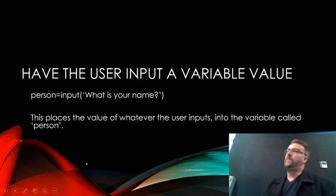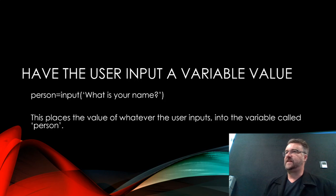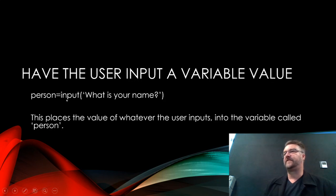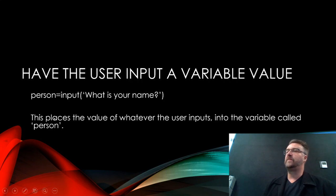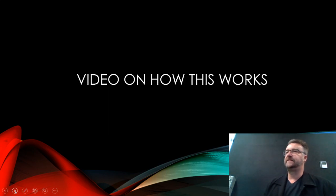Now, sometimes we want the user to input a variable value. For example, they might put in their name, their age, et cetera. The way we do that is we write person equals - so that's the variable name, person - person equals input, what is your name, and notice the inverted commas there. And this places the value of whatever the user inputs into the variable called person.